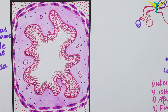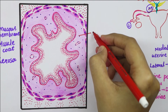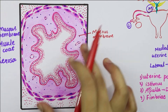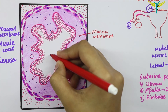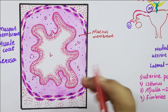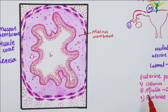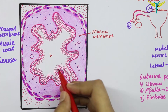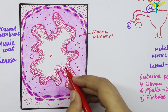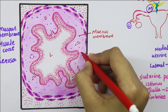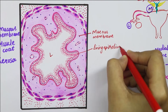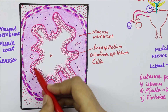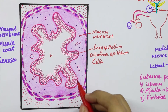Coming to the first layer — the mucous membrane — in this diagram, the mucous membrane shows numerous branching folds that almost fill the lumen of the tube. These folds are very conspicuous in the ampulla, which is the third part of the fallopian tube. Each fold has a highly cellular core of connective tissue, and this mucous membrane is lined by columnar epithelium that rests on a basement membrane.